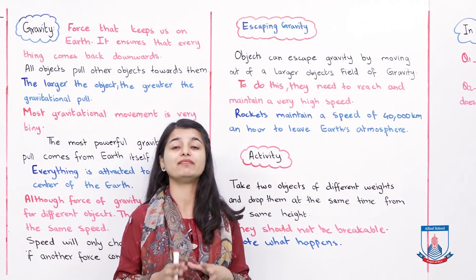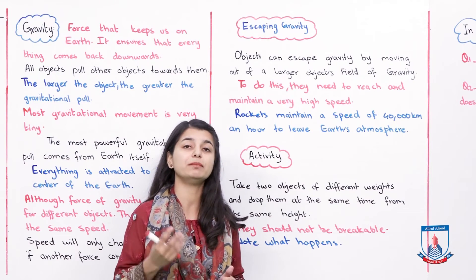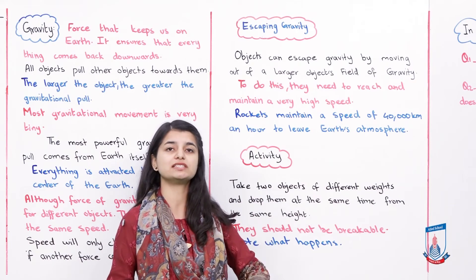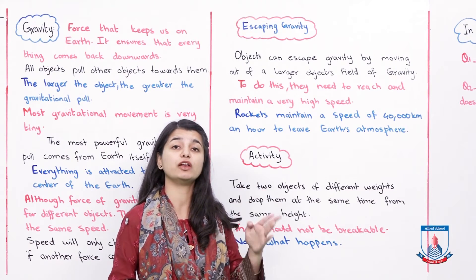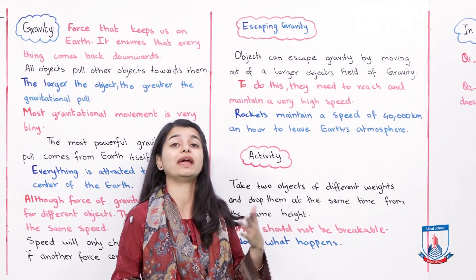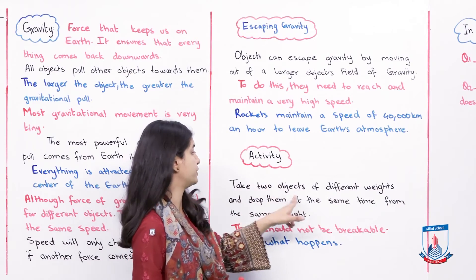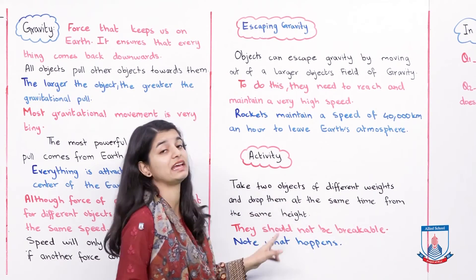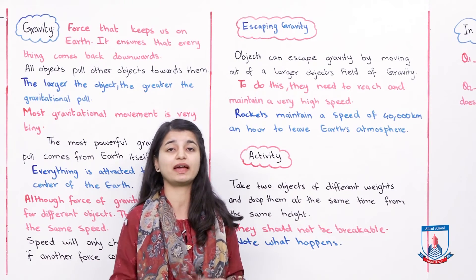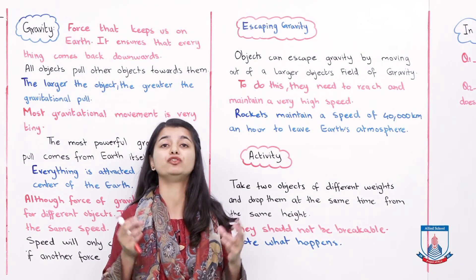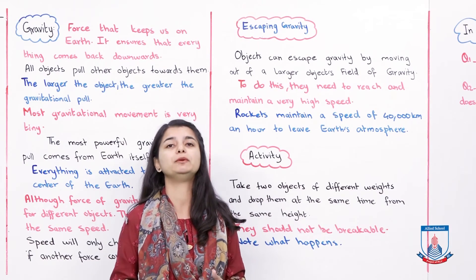Now let's do an activity. Take two objects — a pen, paper, scissors, a stone, anything at all — and drop them from the same height at the same time. Make sure they are not breakable, because if they break you won't be able to conduct the experiment properly. Drop both objects from the same height, such as from one stair, at the same time, and observe what happens.